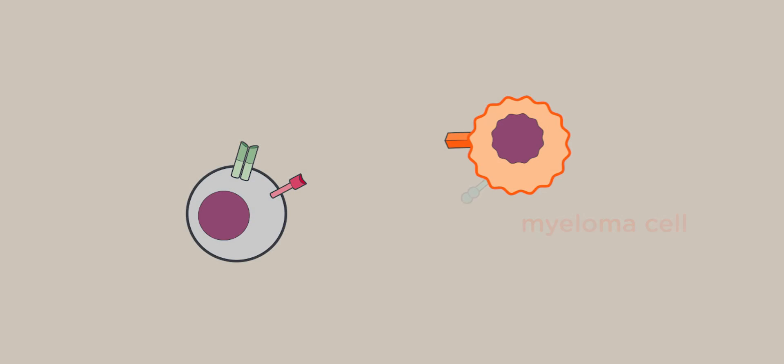There are also new therapies that are called checkpoint inhibitor therapies. They are targeting a specific feature of many cancers in that they silence the immune system. Many cancers express certain proteins on the surface that make them invisible for the immune system and avoid that they are being attacked.